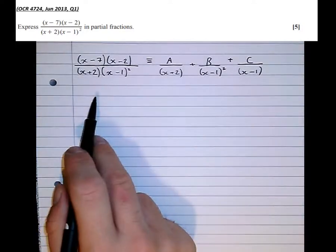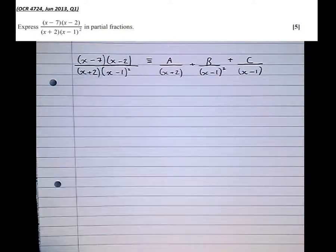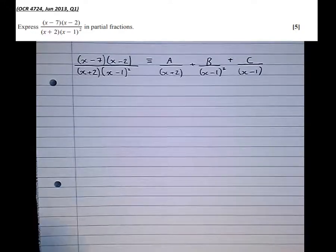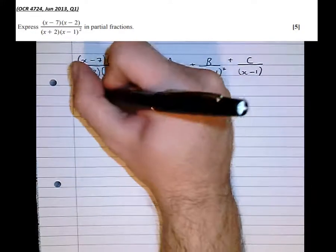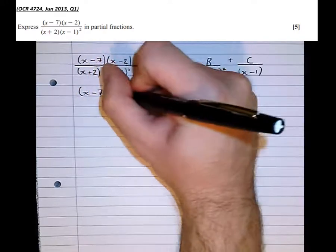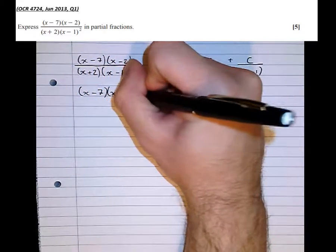OK, so moving on to the next step, multiplying by this denominator here, multiplying by x plus 2 times x minus 1 squared. So if we multiply both sides by that, the denominator disappears on the left-hand side.